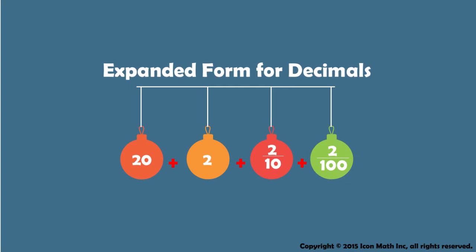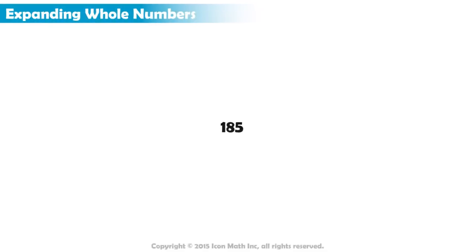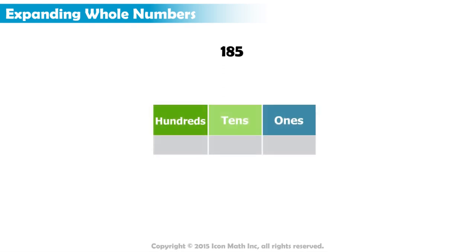Expanded Form for Decimals. Expanding a number is a way to show how much each digit represents based on the place of that digit in the number.